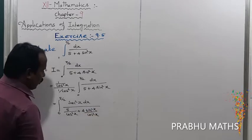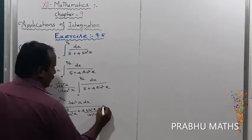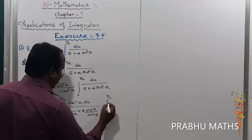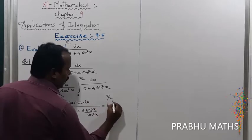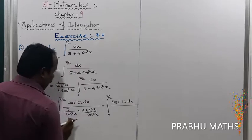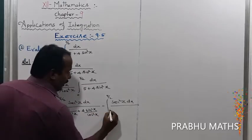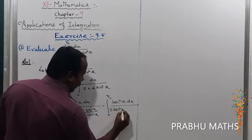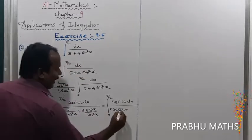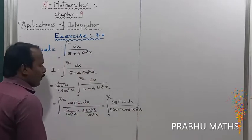So that is equal to the integral from 0 to pi/2 of sec²x dx, all divided by 5 sec²x plus 4 tan²x. Here, sin²x divided by cos²x is equal to tan²x.